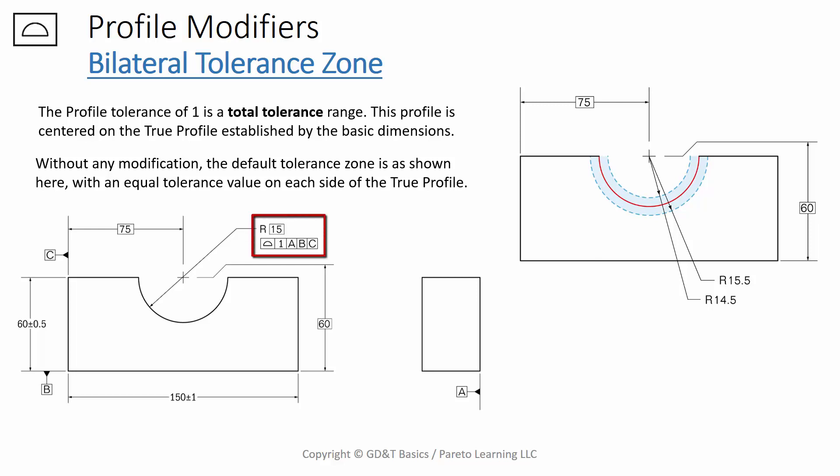Your radius, which is a basic dimension of 15, could go from 14.5 to 15.5. However, there is a way to make this tolerance range asymmetric, so that you don't have 0.5 on each side of the true profile.